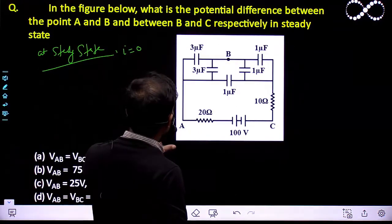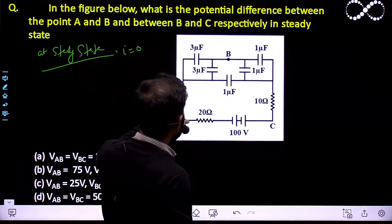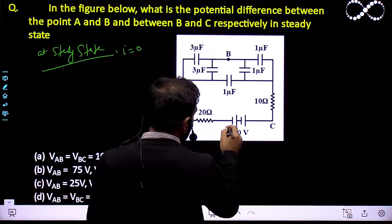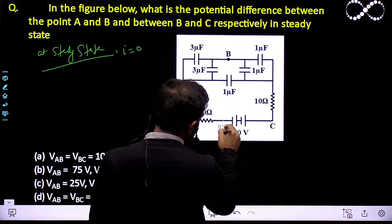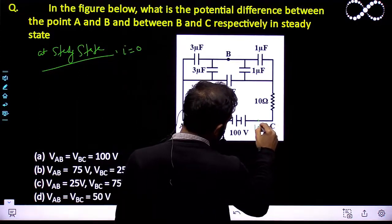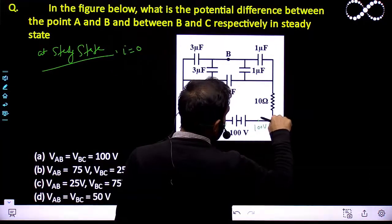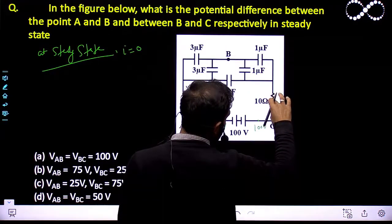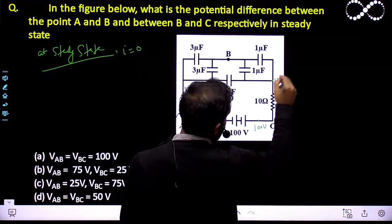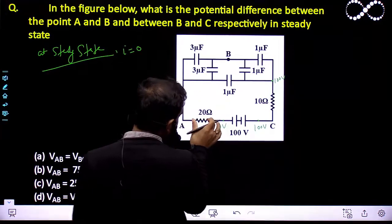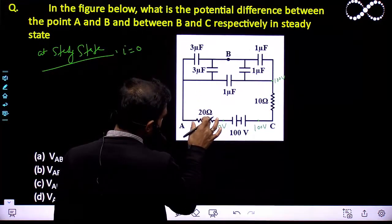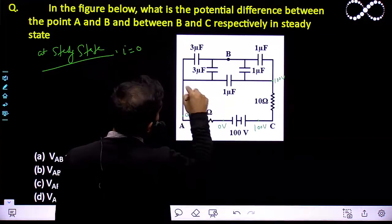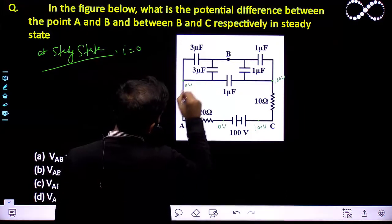Now I need to find the potential difference across A and B, and B and C at this state. Let us take this potential as 0V, so this will be 100V. There is no current flowing, so there is no potential drop here — here also it will be 100V. Similarly, there is no current in this 20 ohm resistor, so there will be no potential drop again. Same voltage will be here, so that will be 0V and this whole part will be 0V.